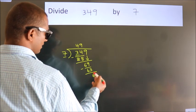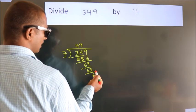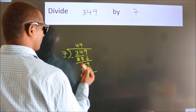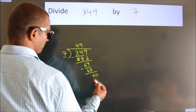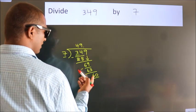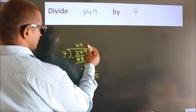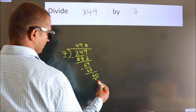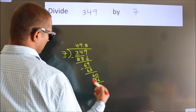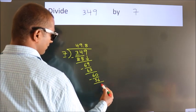After this, no more numbers to bring down. So what we do is, we put a dot and take 0. So 60. A number close to 60 in the 7 table is 7 eights, 56. Now we subtract. We get 4.